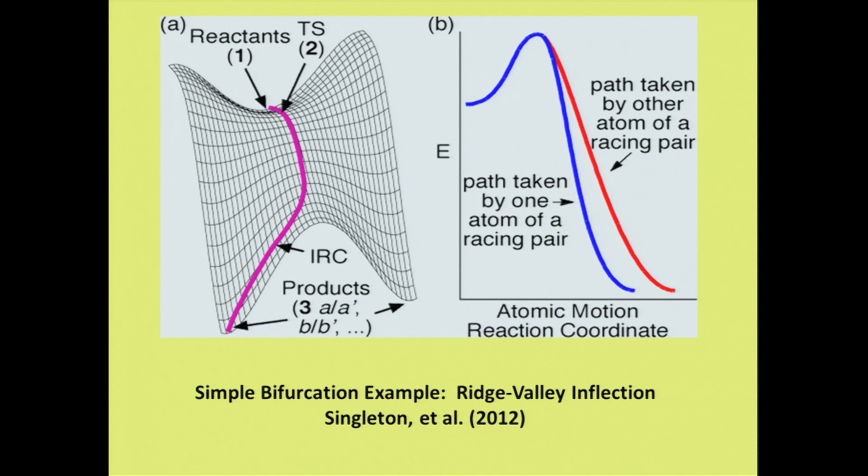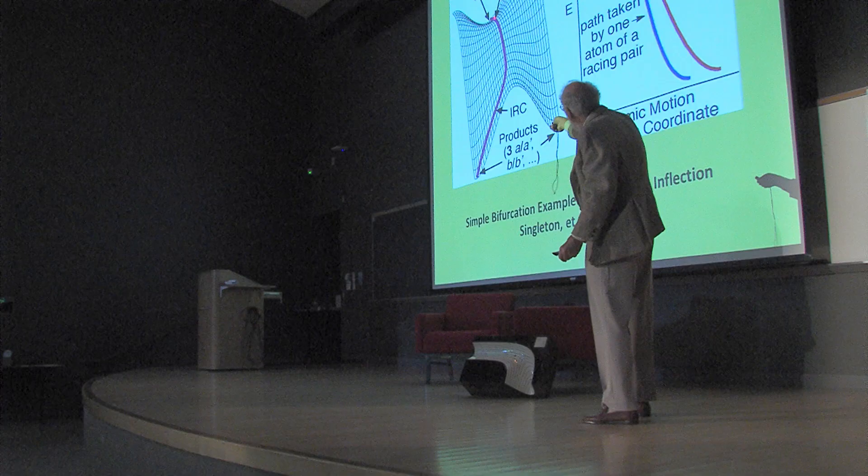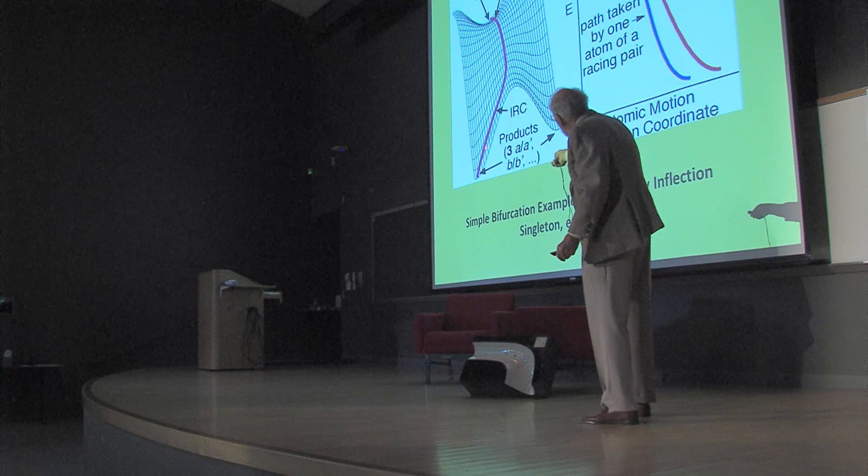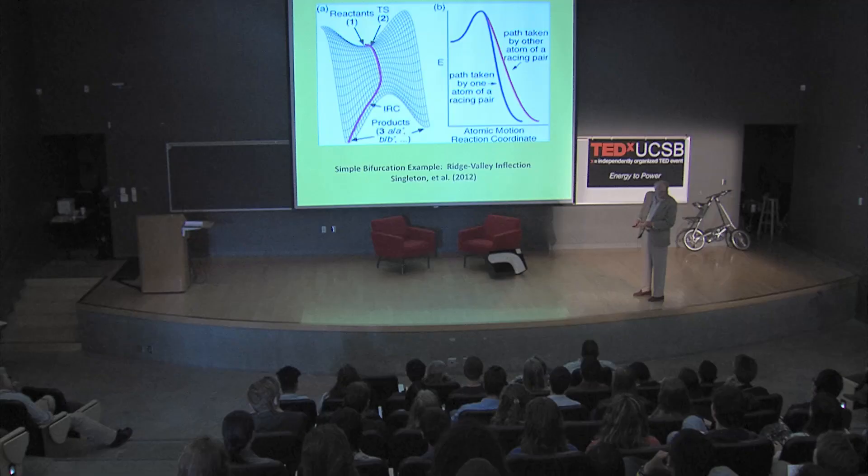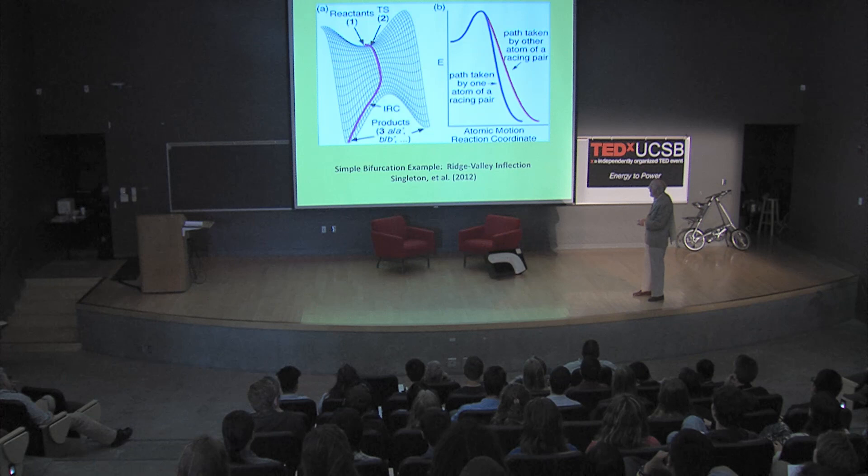Here's a picture of what we're talking about. Here's the transition state coming uphill from the starting material. At the transition state you could branch to two different products. Remember before, when I had two products possible, there were two transition states and you could compare energies and predict the product ratio. Here you have a single transition state and then you branch. How are you going to figure out how much of each you get when you don't have two transition state energies to compare? That's where trajectories come in.